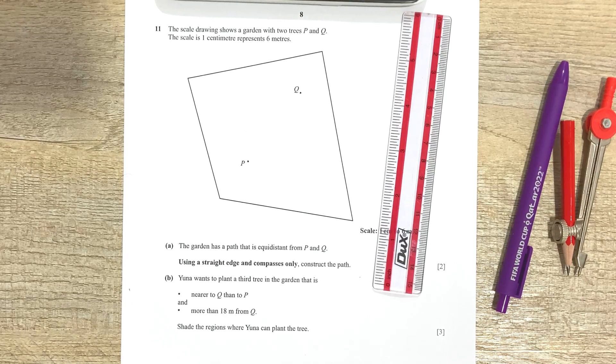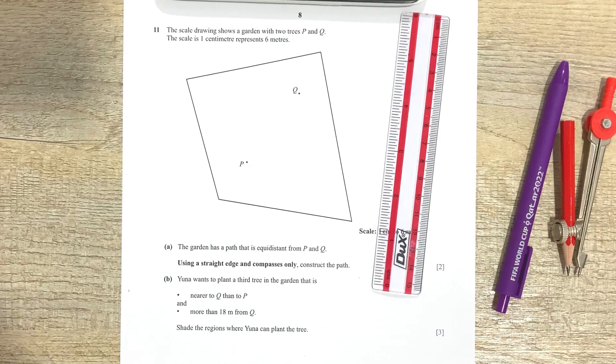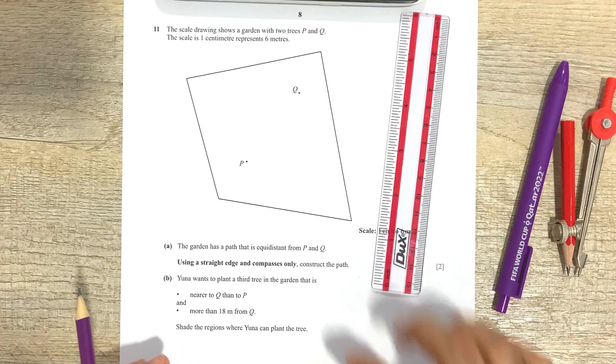Okay so now let's get straight to it. So it says here the scale drawing shows a garden with two trees P and Q. So P and Q over here are the two trees that the question has mentioned.